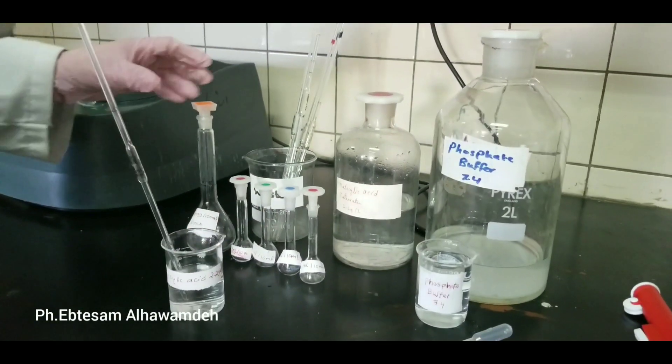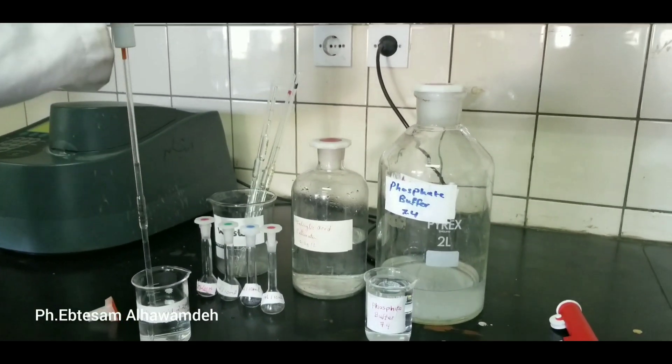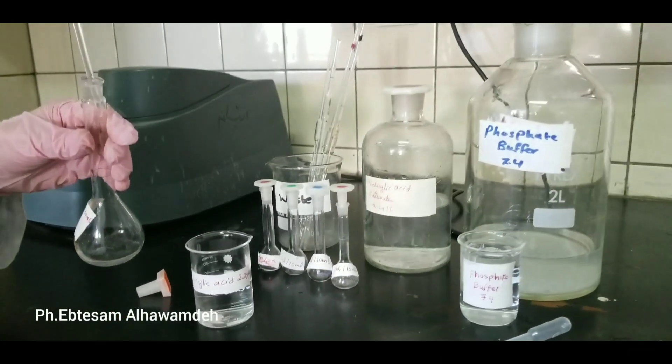First, take 2 ml of saturated solution of salicylic acid, concentration 2.2 g per liter.